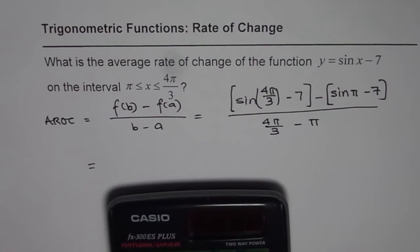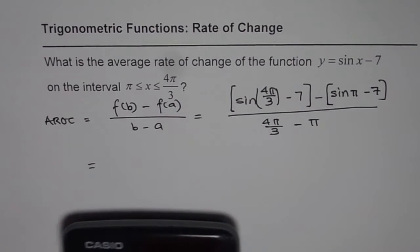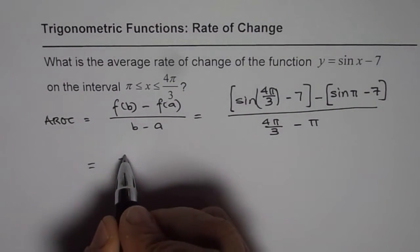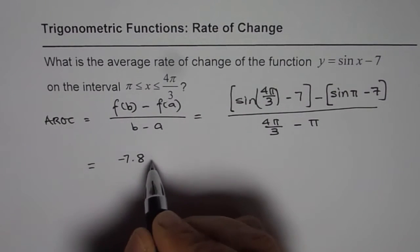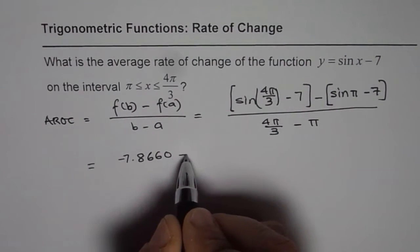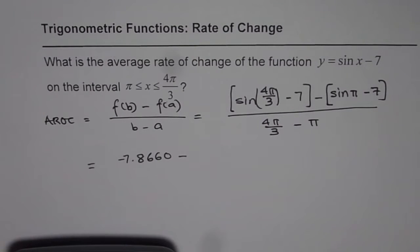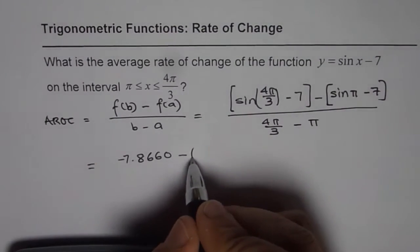Let's find out what is sine of 4 pi divided by 3, bracket close, let's do minus 7 also in this. That term is minus 7.8660 and then we have minus of sine pi. Sine pi you know is 0, so we will get minus 7 itself.